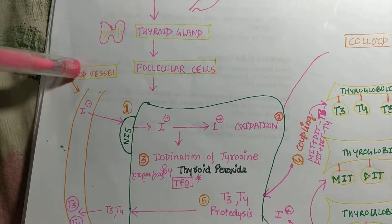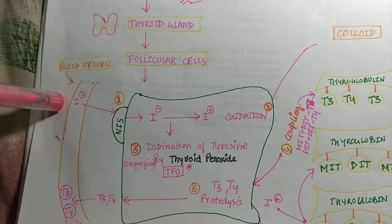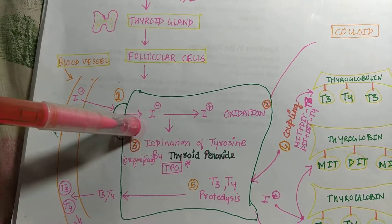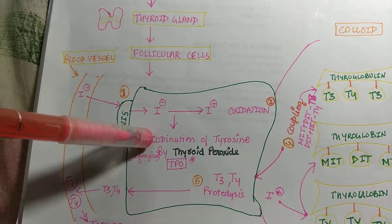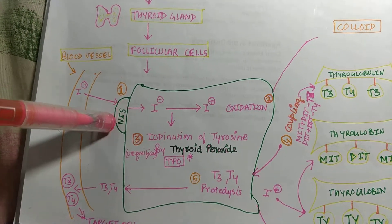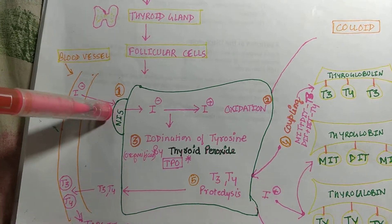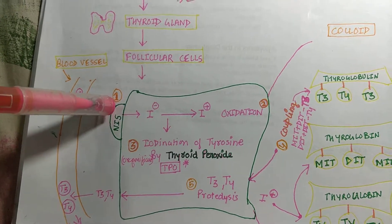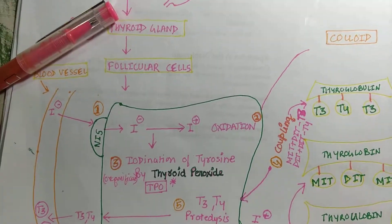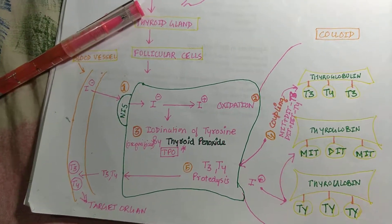The iodine comes from the blood vessels and goes into the follicular cells by use of NIS, which is the sodium iodine symporter. This is the first step in the formation of thyroid hormone.